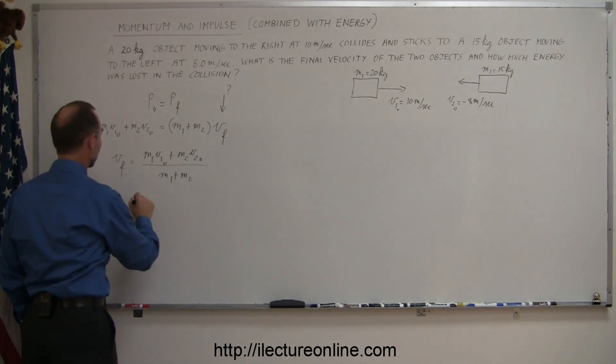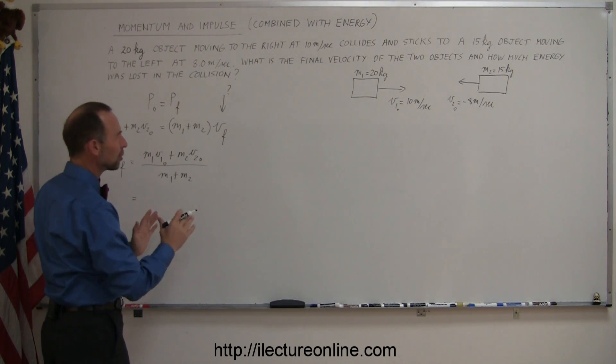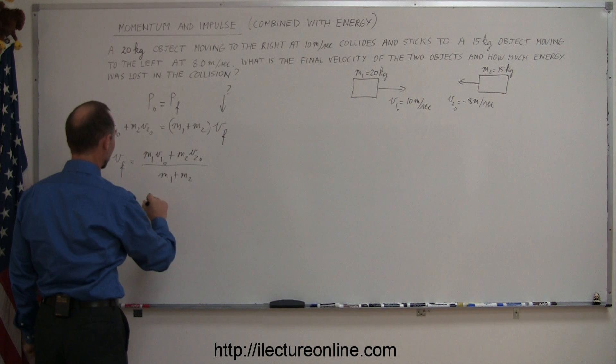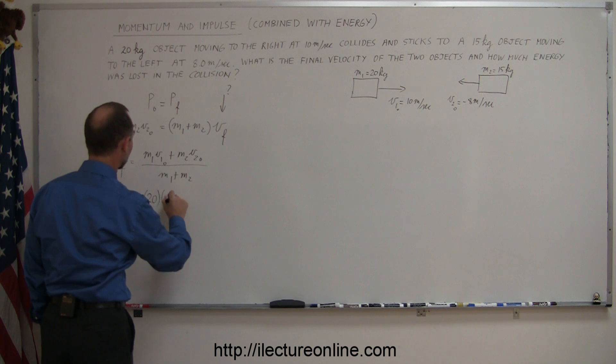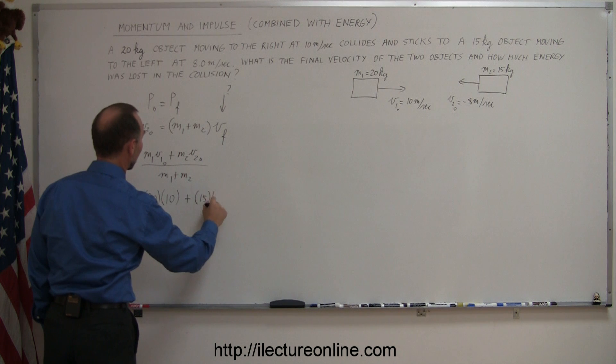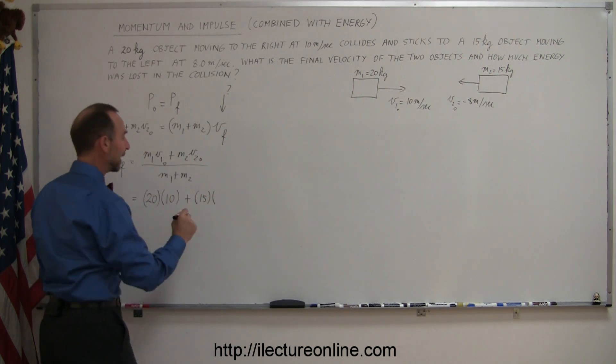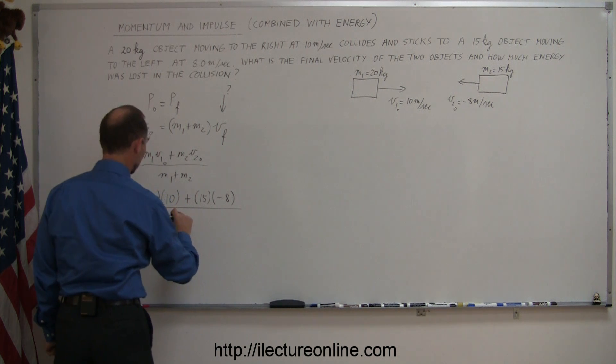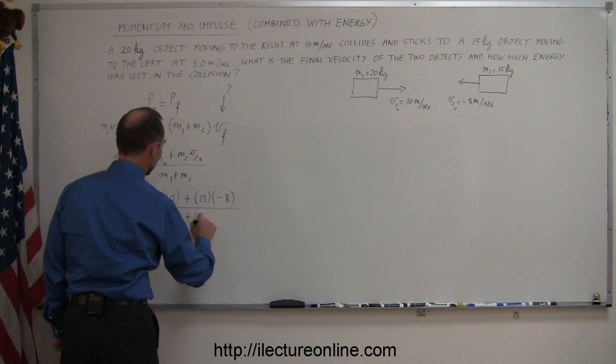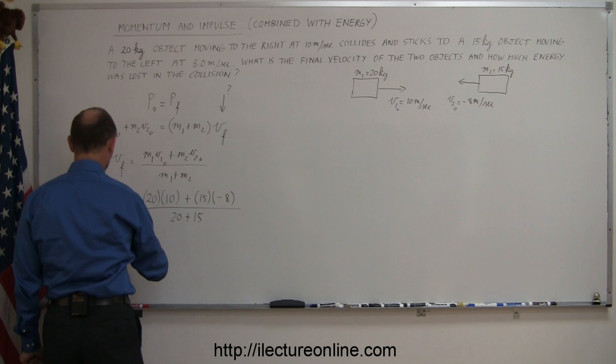Alright, now let's plug in the numbers. So this is equal to the mass, and I'm going to leave the units off, looks a little bit cleaner. So we have 20 kilograms times V1, that would be 10 meters per second in the positive direction, plus the next one is 15 kilograms times V2, which is a minus 8, because it's moving to the left, all divided by the sum of the two masses, which is 20 plus 15.